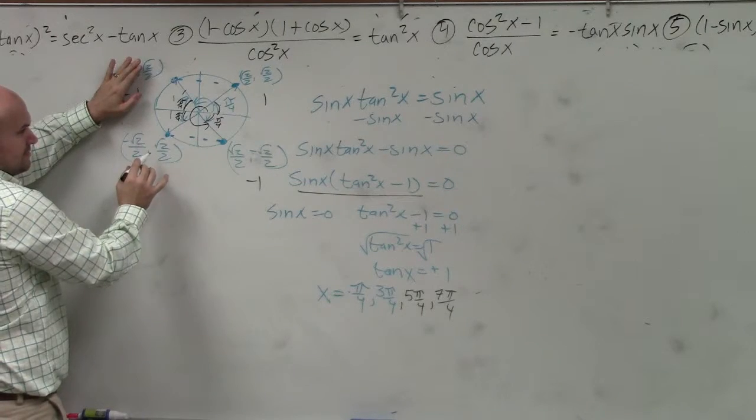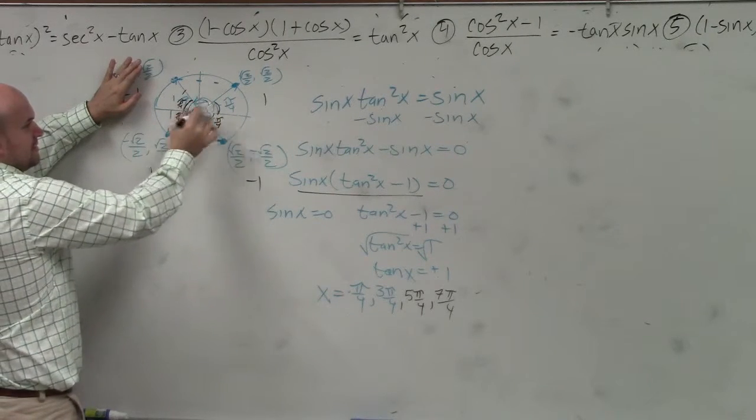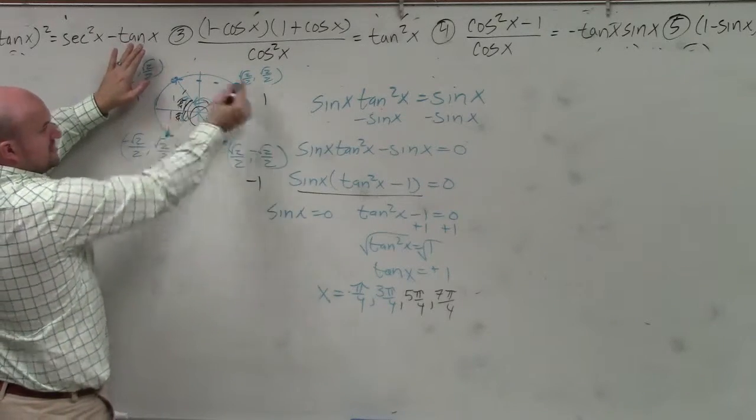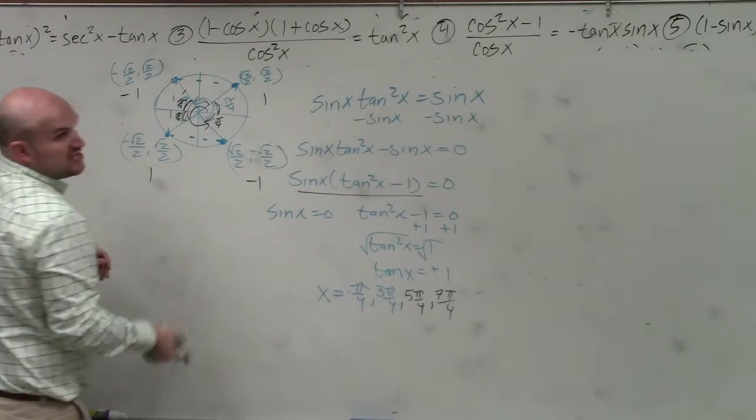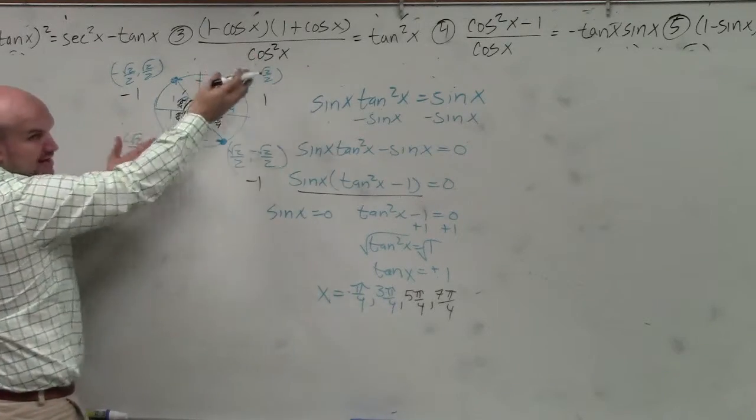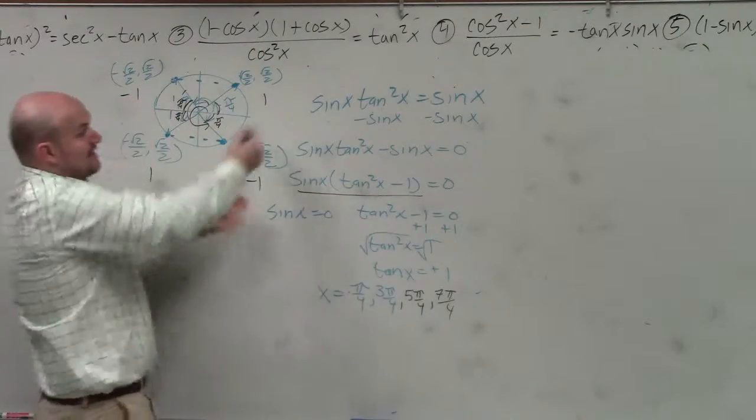This is 5 pi over 4, this one. If I covered these up, if it was only for positive 1, I would only do these two angles. If it was only tangent of x equals negative 1, then I would only do those two angles, right? But it's for plus or minus, so I have to do all four.